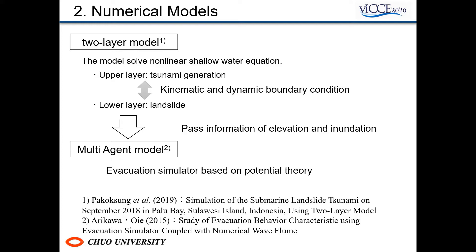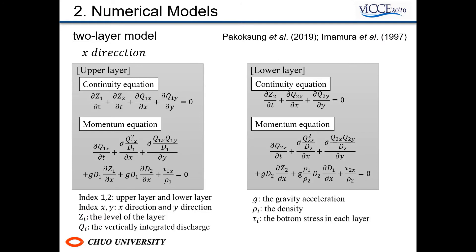I will explain the combination of the micro-model used in the present study. In the two-layer model, landslide tsunamis are simulated and inundation depths are output. By passing information on depth and water elevation to the multi-agent model, it is possible to simulate evacuation action. The model solves non-linear shallow water equations with kinematic and dynamic boundary conditions. To simulate a tsunami induced by submarine and sub-aerial landslides, it is necessary to consider the interference between soil layers and water layers.